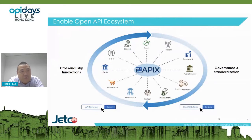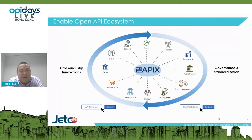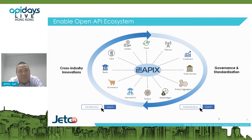Ultimately, we want to build an open API ecosystem. We don't want to be limited by traditional relationships — for example, assuming lending must be related to banking or banking to investment. We want to bring together all different kinds of API providers and consumers, provide them the opportunity to interact, and at the end create different kinds of use cases that no one would have thought about before. That is our objective.